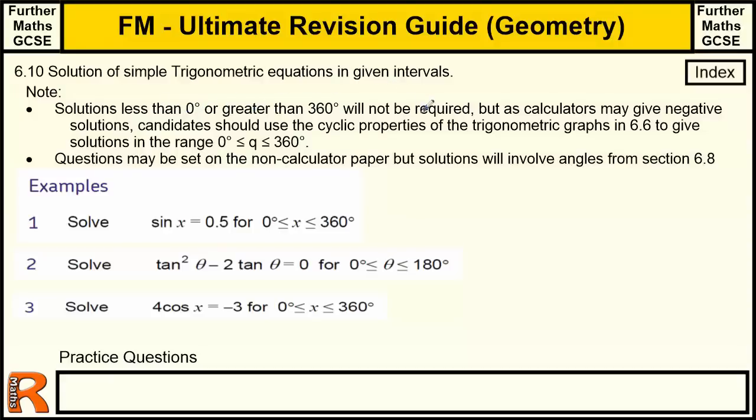Things we need to be aware of. Solutions less than 0 or greater than 360 will not be required. So we're only going to be on the interval 0 to 360 or shorter, maybe 0 to 180 or any other set interval between those two. We need to be aware of the graphs that we drew in 6.6, 6.7 and how to find solutions using the cyclic and symmetrical properties of the graphs. Questions may be non-calculator if we're using things like 30, 60, 90 or 45 or 0 angles from section 6.8.